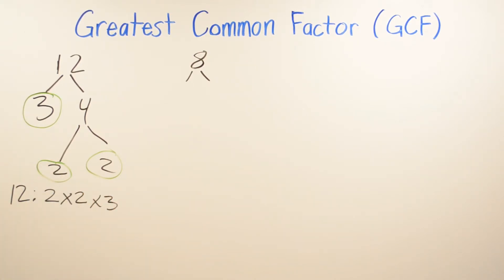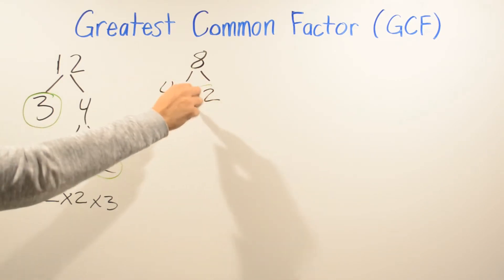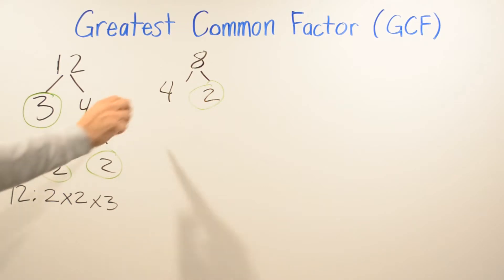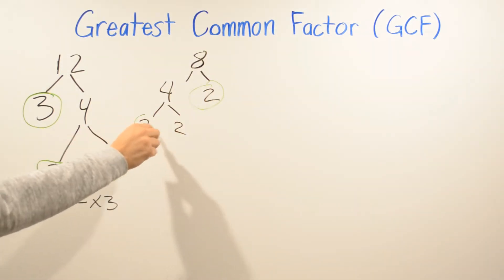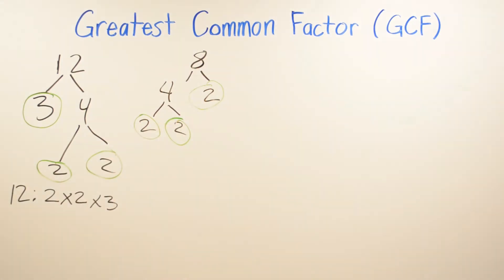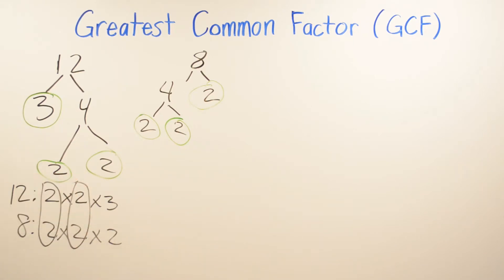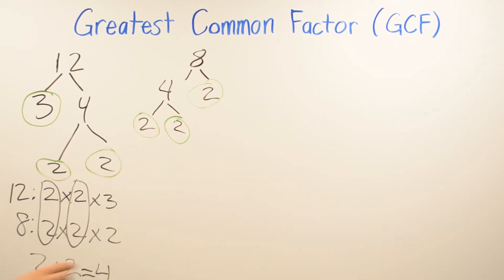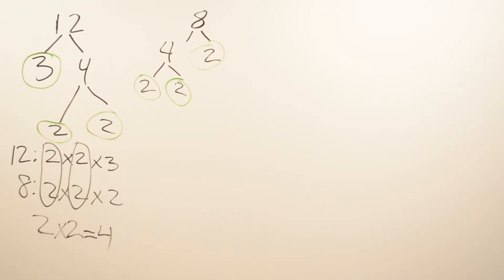We do the same thing for 8: we multiply 4 times 2. The 2 is prime because we cannot simplify it further. We simplify 4 into 2 times 2, so 8 is 2 times 2 times 2. Now we look at both factor trees and identify which prime factors are the same. The matching ones give us 2 times 2, which is 4. So 4 is the greatest common factor of 8 and 12.